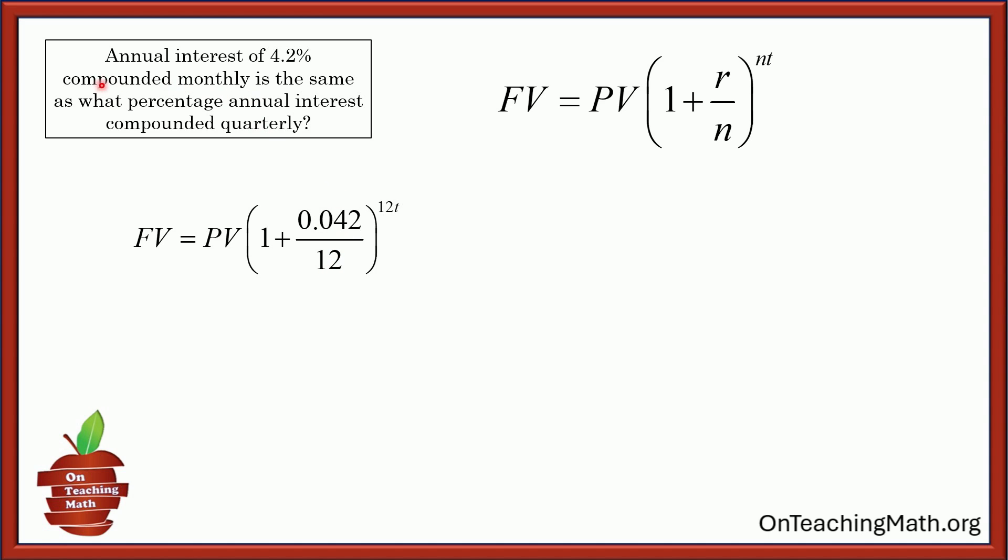The reason it's divided by 12 is because it's compounded monthly and to the power of 12T because N is the number of times per year. All right. Now let's see the other one, the other situation where it's compounded quarterly, N would be four. Otherwise, everything's the same.